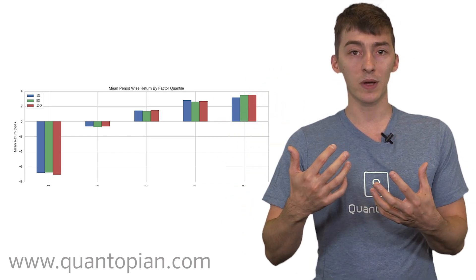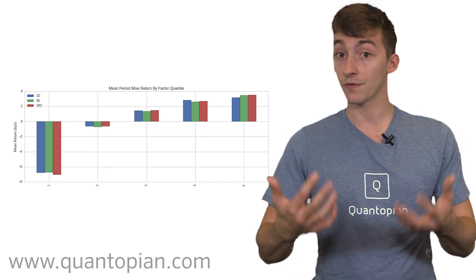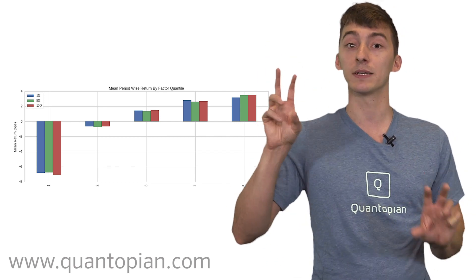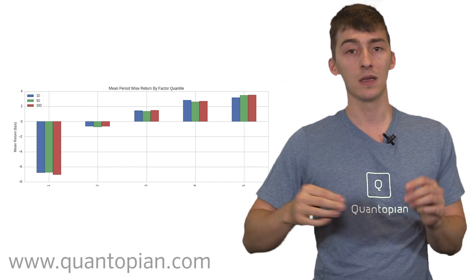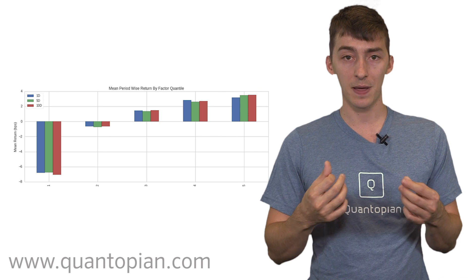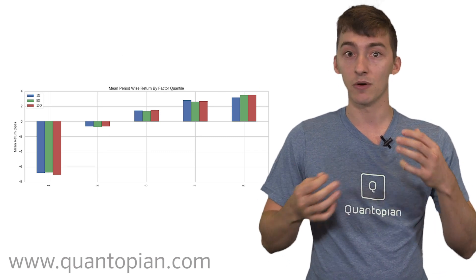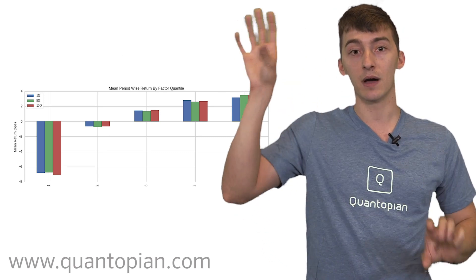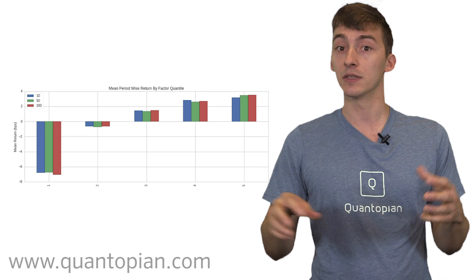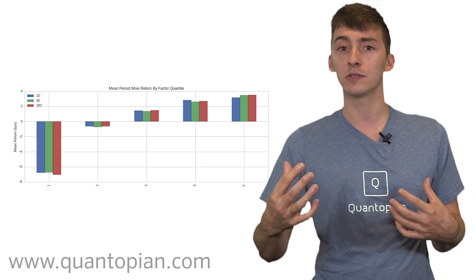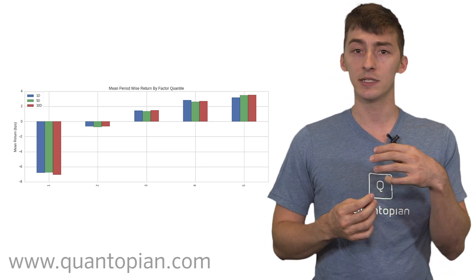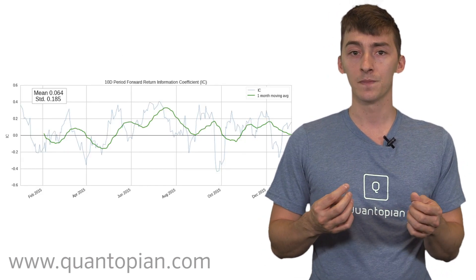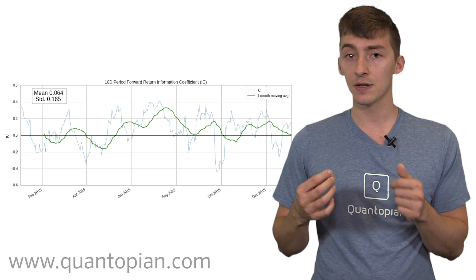What we're doing with a factor portfolio is we're taking a bet on the relative performance of these baskets — not on the absolute performance of anything. So we just want these to spread apart from each other, and this is what the time series graphs and the cumulative returns of each individual quantile give us.